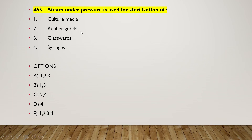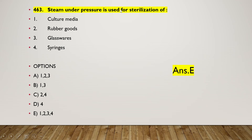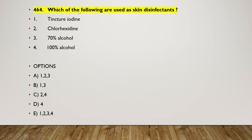The next question: steam under pressure is used for sterilization of culture media, rubber goods, glassware, or syringes. The right answer is option E — all are correct about steam under pressure used for sterilization of all these elements.